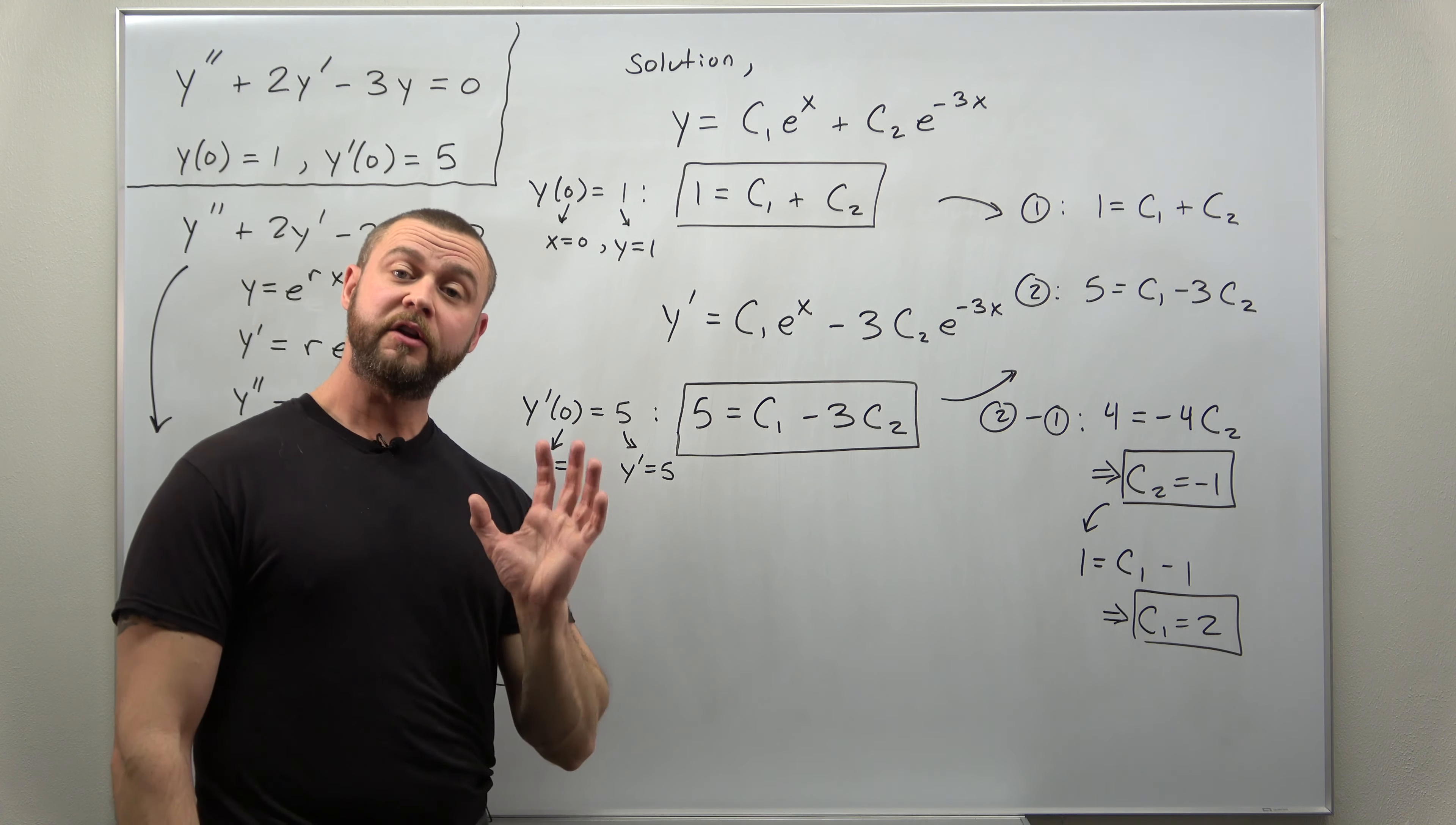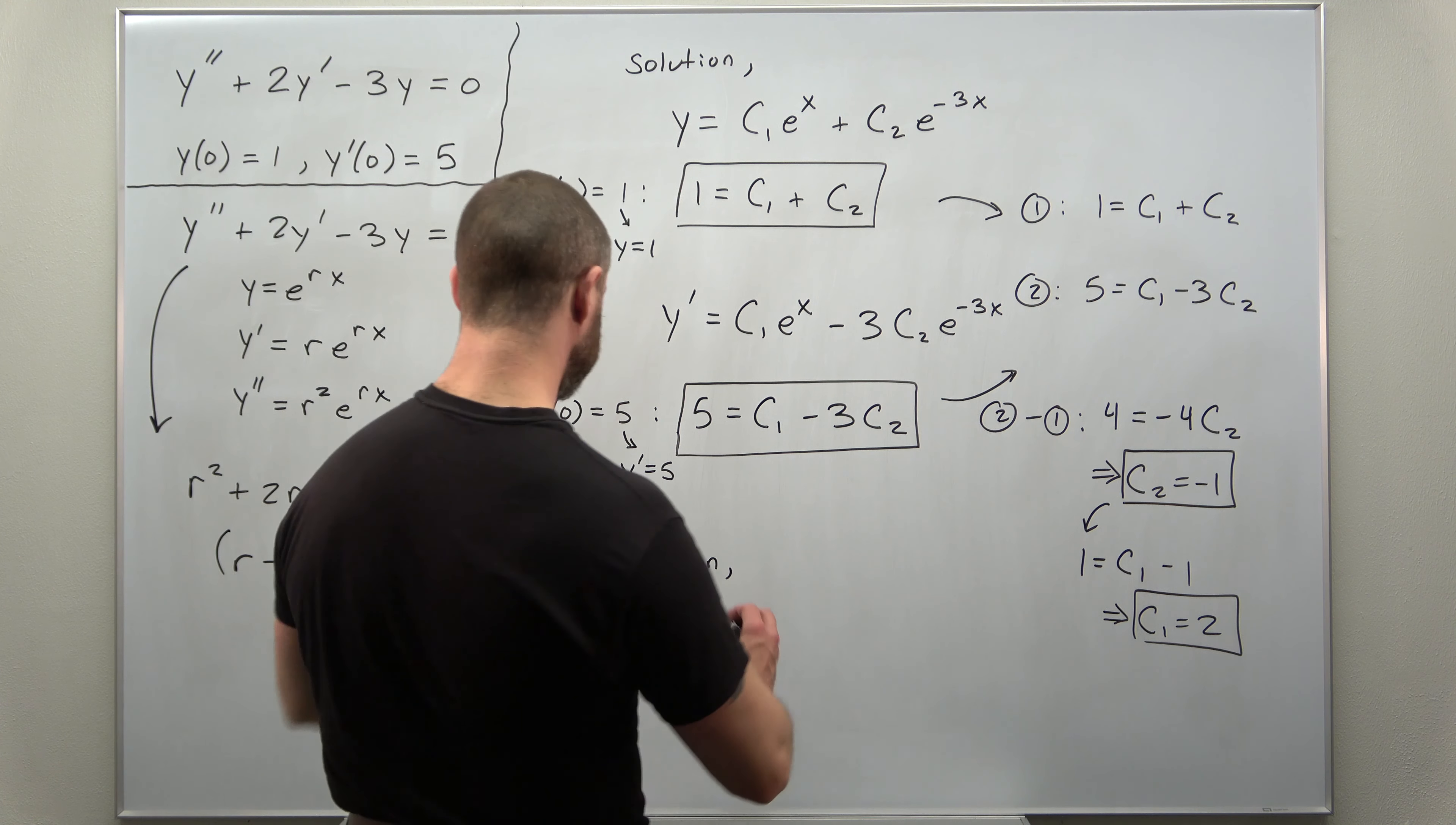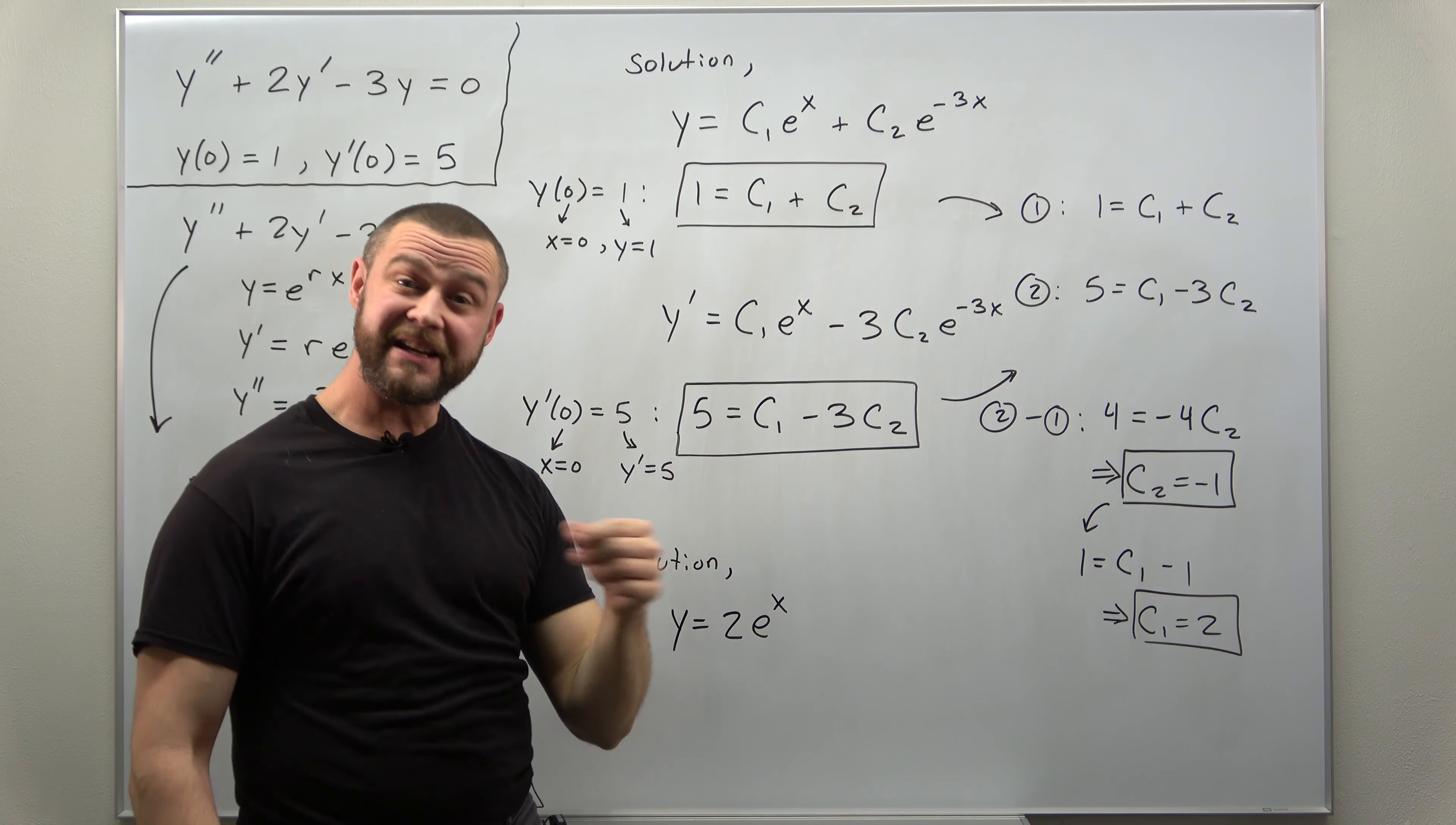And at this point, we're done. Let's just write down our solution with initial conditions included. And we're just basically plugging the values for c1 and c2 back in to our solution at the top here. So it looks like we get y equals c1, which is the value 2 times e to the x, and then we add to that c2, which is negative 1, so we can really write that as a subtraction sign, times e to the negative 3x.